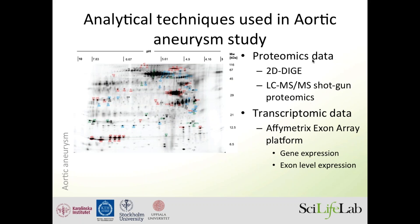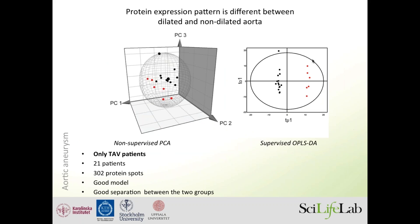Looking at protein expression data, in order to find differences between individuals with tricuspid aortic valve and those with bicuspid aortic valve, I split the analysis into two parts: first, tricuspid aortic valve patients — dilated and non-dilated; second, bicuspid aortic valve patients — dilated and non-dilated. For the tricuspid aortic valve patients we had 21 patients and 302 protein spots, and the model is good based on R-squared and Q-squared values available in the publication.